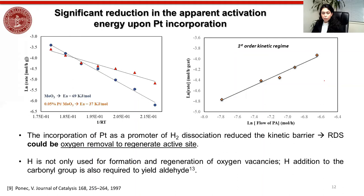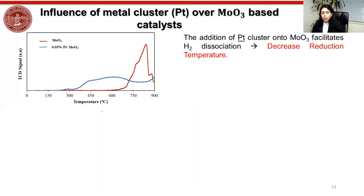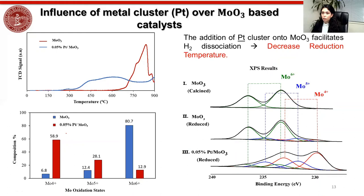These results show that incorporation of platinum enhances hydrogen dissociation and reduces the kinetic barrier. From TPR characterization, the reduction temperature decreased by 300°C when we add 0.05% platinum. We also studied the catalyst surface by XPS and found a significant change at 0.05% platinum: Mo⁵⁺ increased almost two times, and Mo⁴⁺ increased very drastically with this tiny amount of platinum.